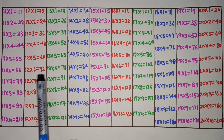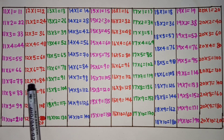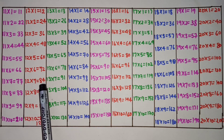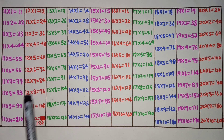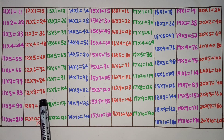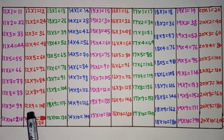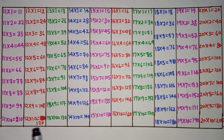12 6s are 72, 12 7s are 84, 12 8s are 96, 12 9s are 108, 12 10s are 120.